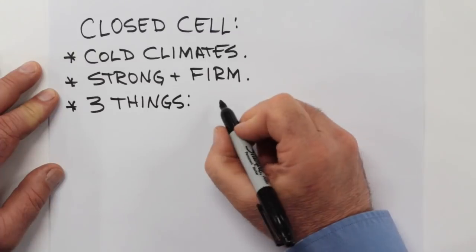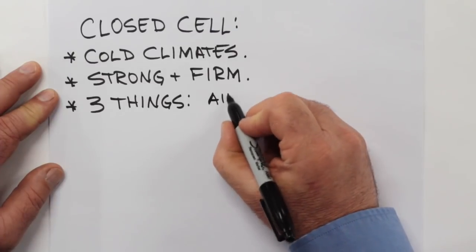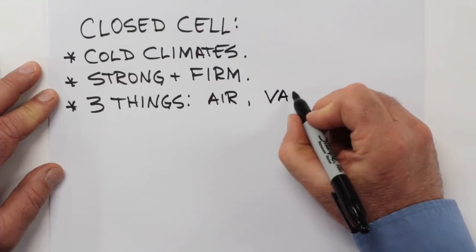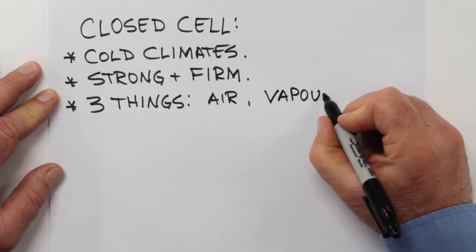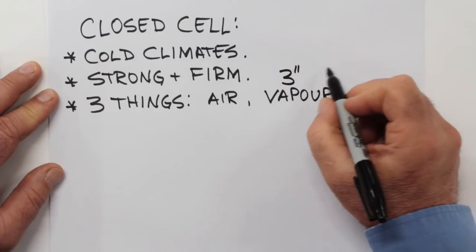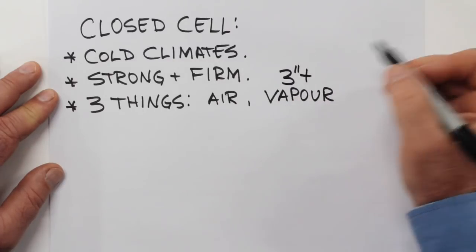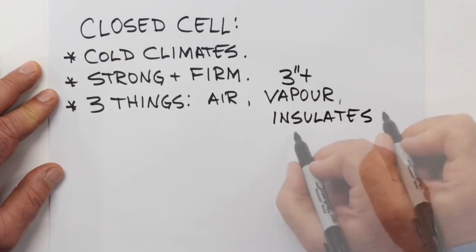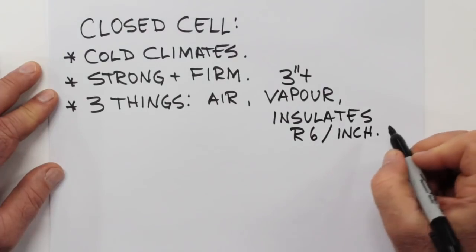Closed cell also does three things well. First, it blocks air movement exceptionally well. Second, it blocks the passage of water vapor. That's the quality that separates it from open cell, as long as that closed cell is applied three inches thick or thicker. And of course, closed cell does deliver exceptional insulation properties as well, about R6 per inch.